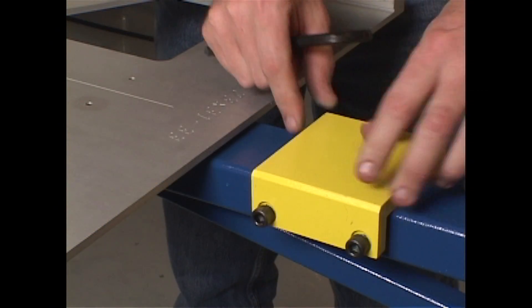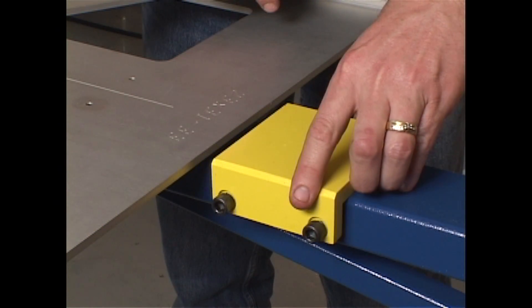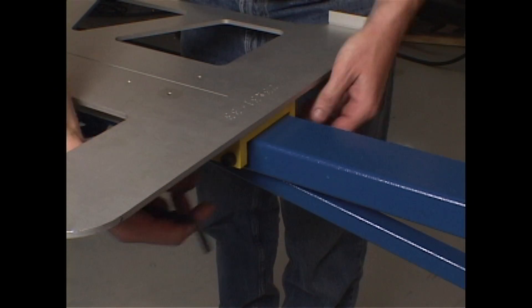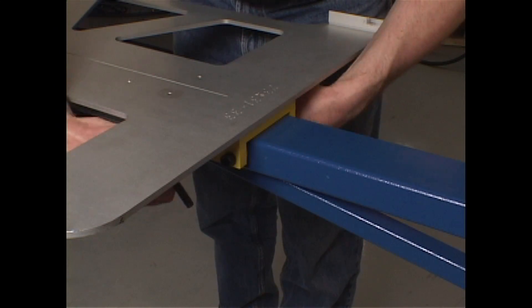Depending on the height of the pallet leveling system, the yellow pallet stop block may contact the pallet or slide under to contact the lower pallet extrusion. Either position is acceptable.